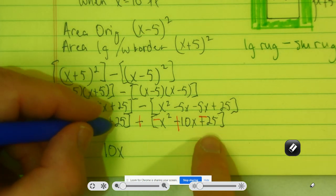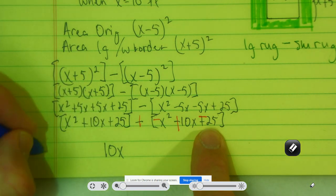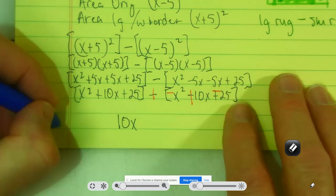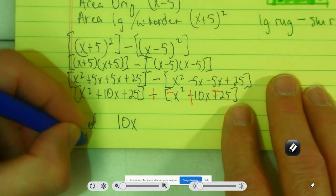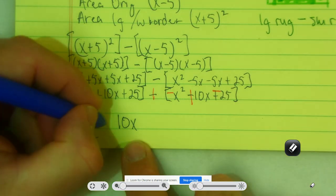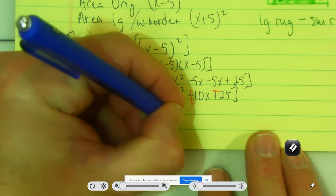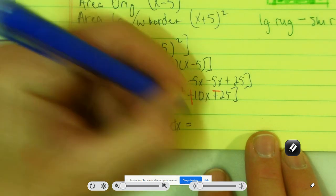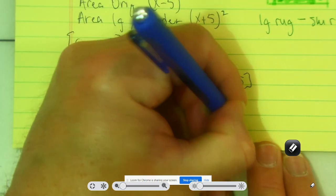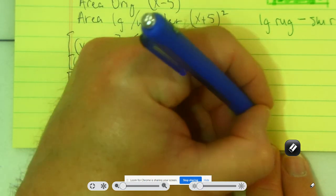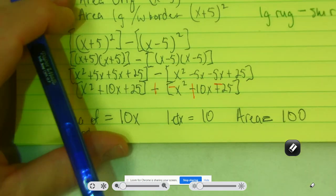So the area of the border is 10x. Let x equal 10, and so the area would be 10 times 10, or 100.